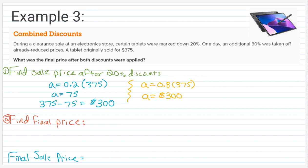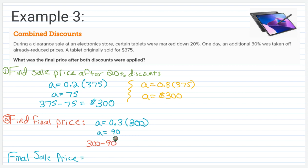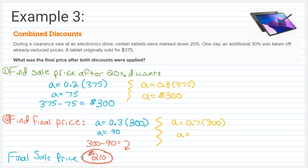Either way you find that sale price of $300 after the 20% discount. Now we find the final price by taking 30% off the reduced price. In two steps: 0.30 times $300 equals $90, so $300 minus $90 gives us $210. In one step: since we're getting 30% off, we're paying 70% of $300, so 0.70 times $300 equals $210. Same answer, just a slightly different method.